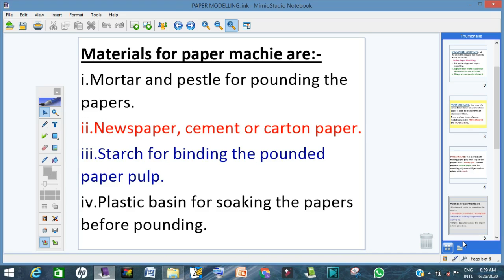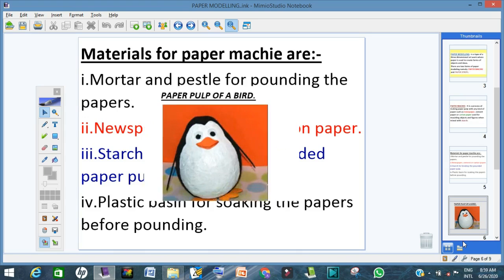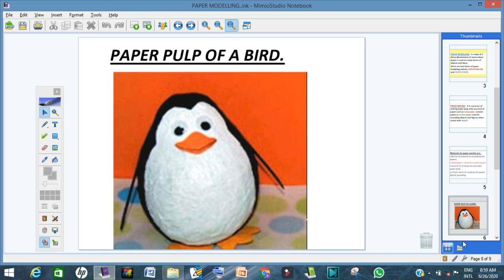We need mortar and pestle to pound the paper. As I said earlier, the newspaper, cement paper or carton, then starch to bind the pounded paper, and then you have plastic basin for soaking the paper before pounding. Here is a paper pulp of a bed.